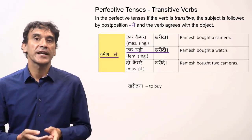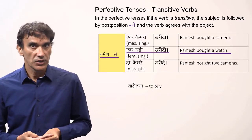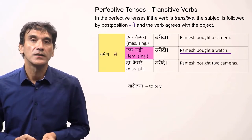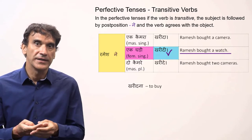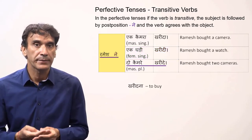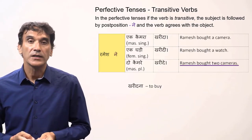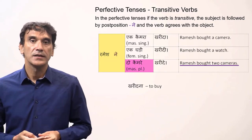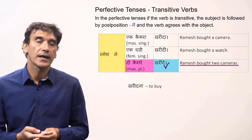In the second sentence, Ramesh ne ek ghadi kharidi — Ramesh bought a watch. The object 'ghadi' (a watch) is feminine singular, so the verb takes the feminine singular form 'kharidi'. In the third sentence, Ramesh ne do camera kharidie — Ramesh bought two cameras. The object is masculine plural ('do camera'), so the verb takes the masculine plural form 'kharidie'.